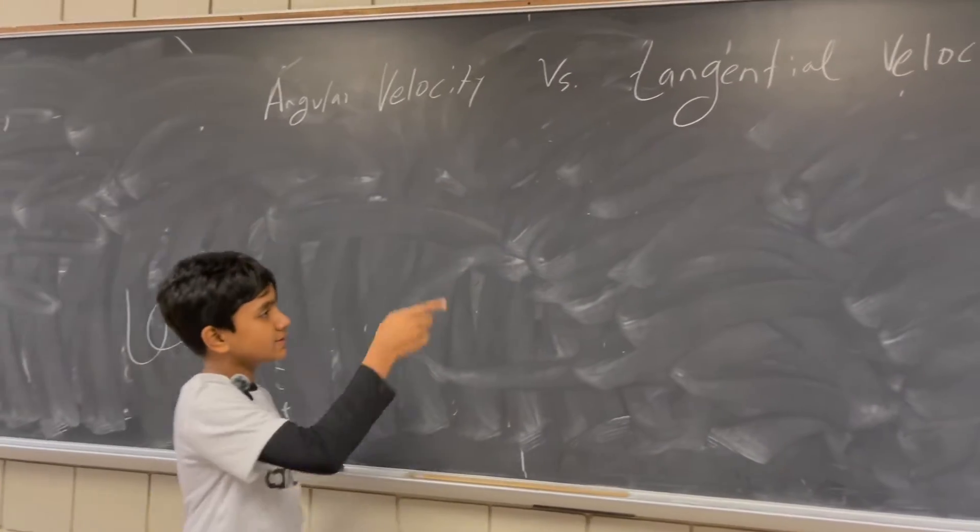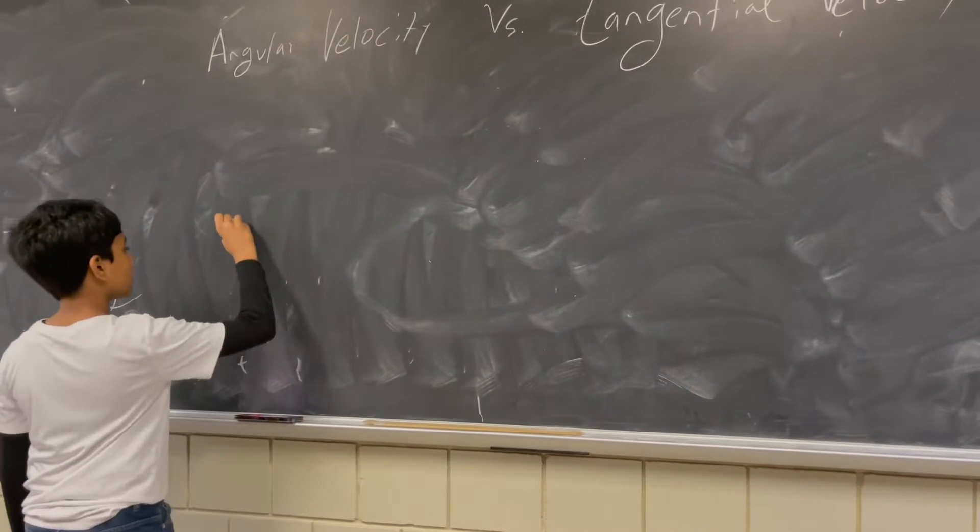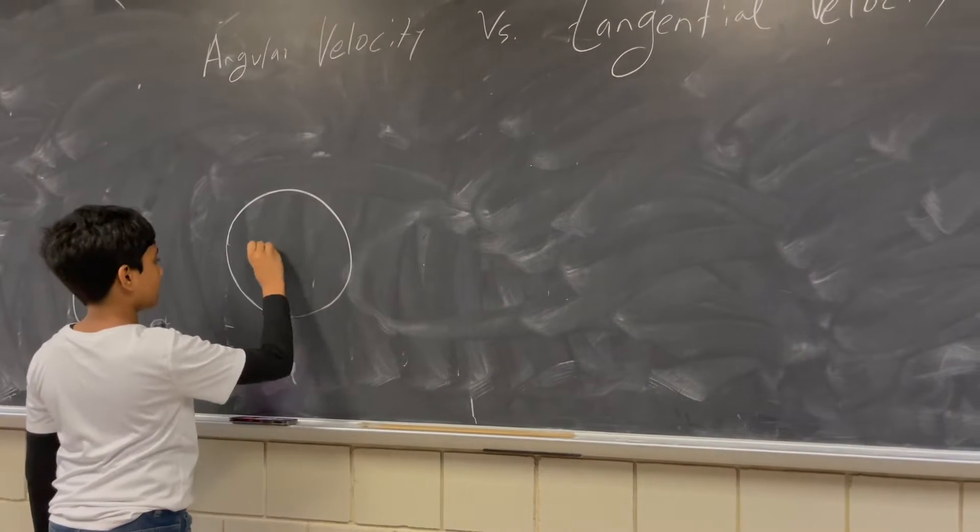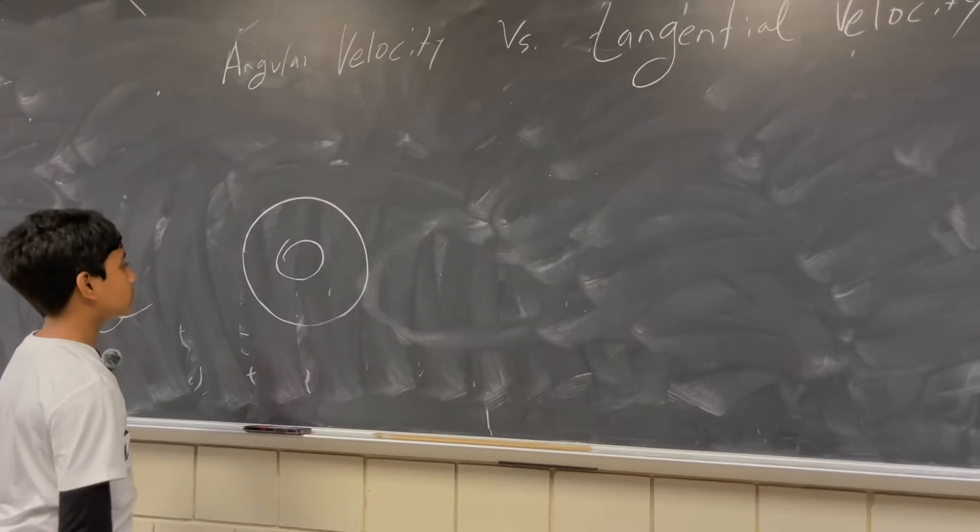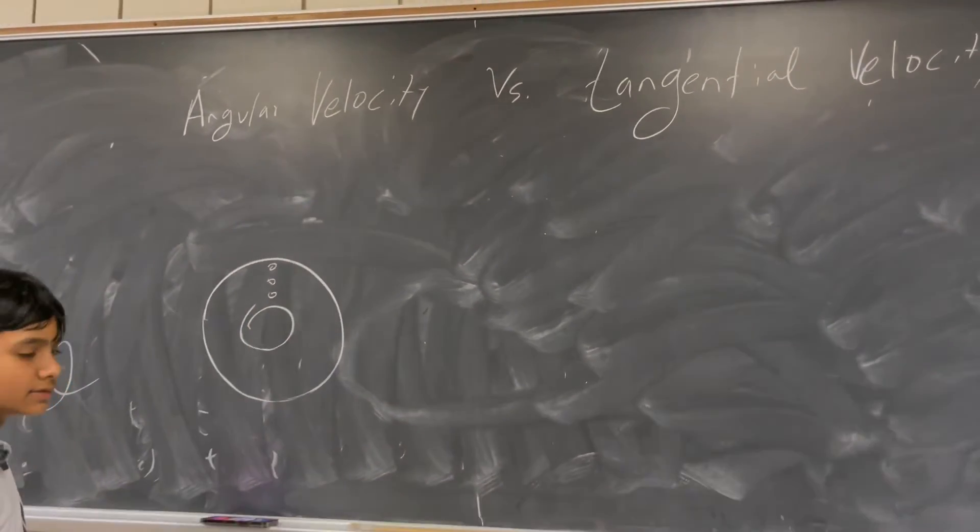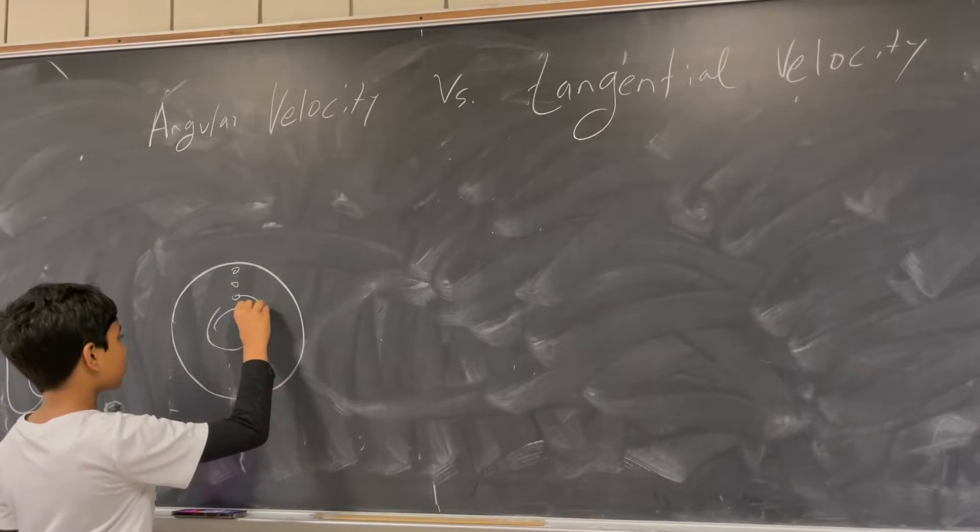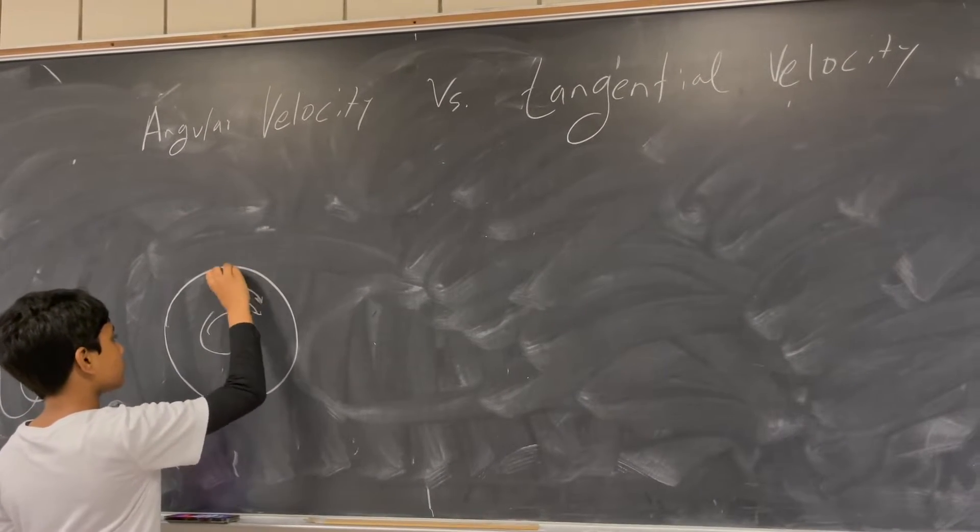Angular versus tangential velocity. If you don't know the difference between the two, you can sort of imagine a record player, and if you put a few objects on the record player as it was spinning, since it's spinning at a constant rate, all three of these would have the same angular velocity.